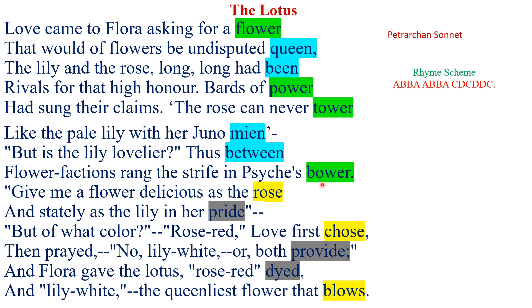For the sestet, the rhyming words are: tower, mean, between, then rose, pride, choose, provide, died, blows. This gives us the CDC and DDC rhyme scheme, completing the full pattern ABBA, ABBA, CDC, DDC.